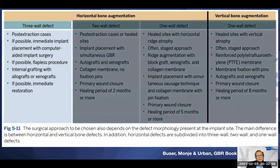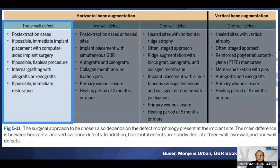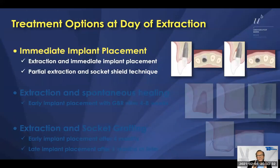Three-wall defects are most often post-extraction cases with immediate placement. When we do that, we use a flapless procedure, internal grafting, and if possible immediate restoration — often with computer-assisted implant surgery to ensure correct positioning. We do this when there is a thick buccal wall. Two options exist: extraction with immediate placement, or partial extraction using the socket shield technique — a very interesting biological concept that I have not yet performed myself, but groups are working on it.